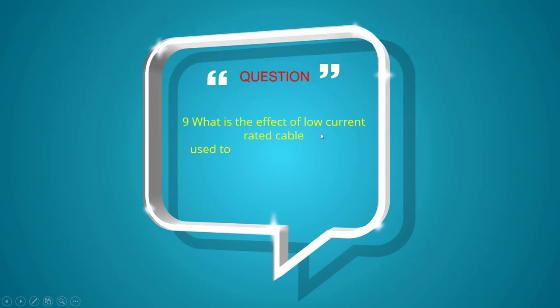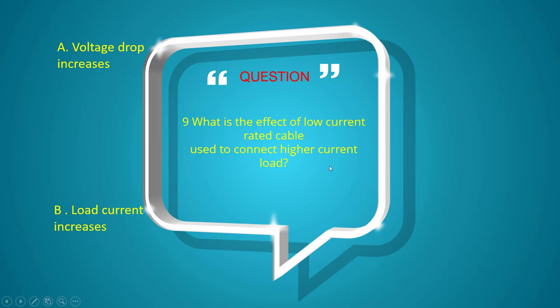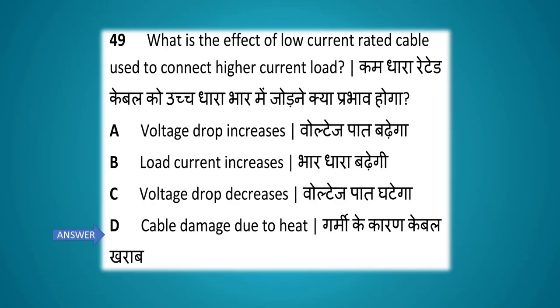What is the effect of a low current rated cable used to connect a higher current load? Options: voltage drop increases, load current increases, voltage drop decreases, cable damage due to heat. The answer is cable damage due to heat.